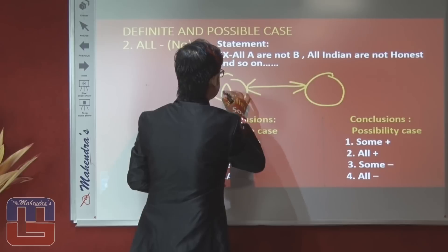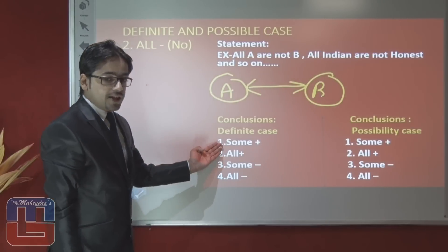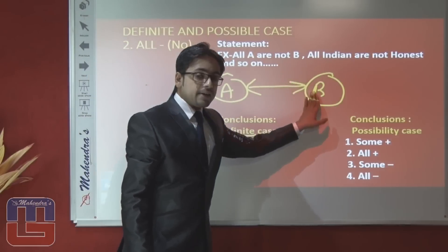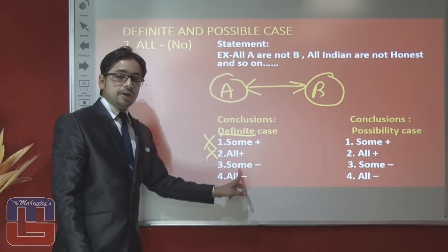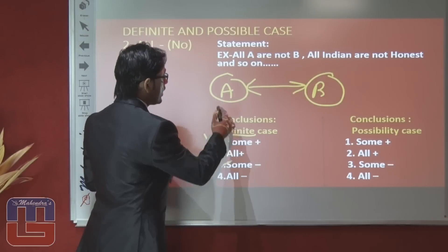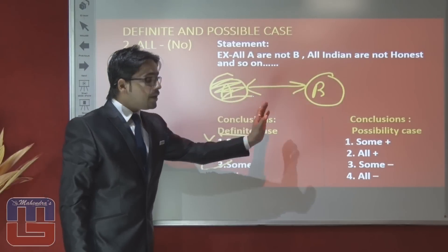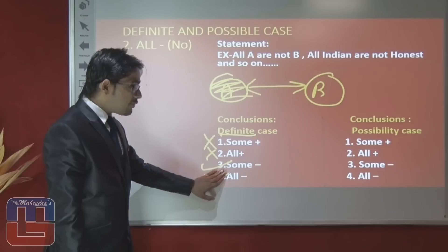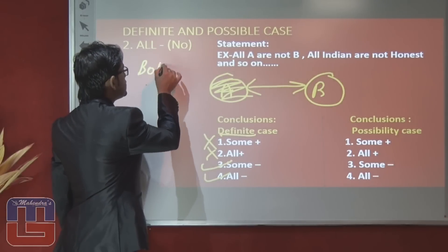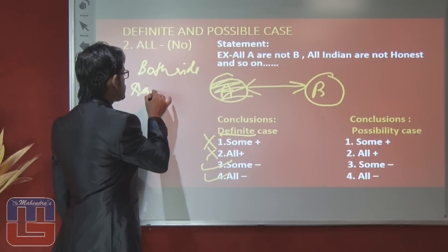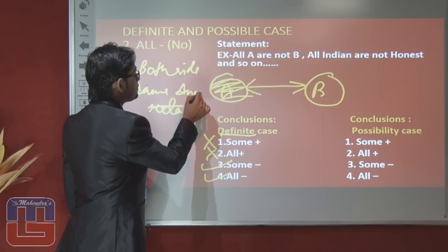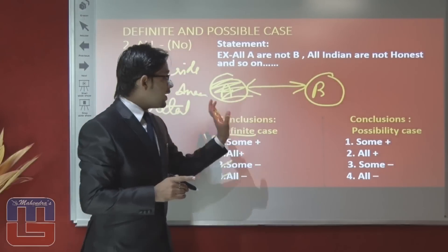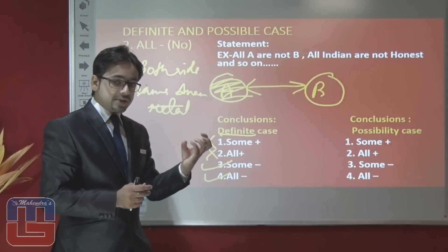When the statement is 'all A are not B': first conclusion (some A are B, positive) — false, because the statement is negative; second conclusion (all A are B, positive) — false; third conclusion (some A are not B) — definitely true; fourth conclusion (all A are not B) — true, already stated. Both sides have the same answer. Some B are not A is true, all B are not A is true, and no A is B / no B is A are also true. Examiner can ask any of these.